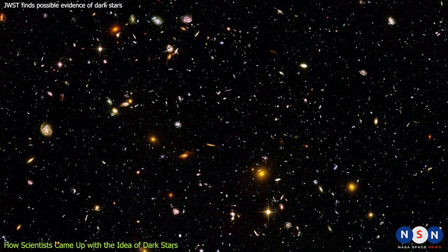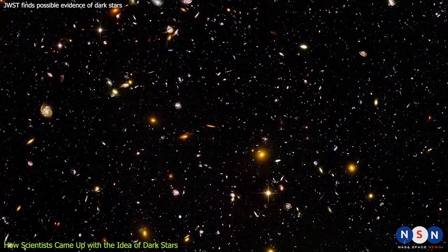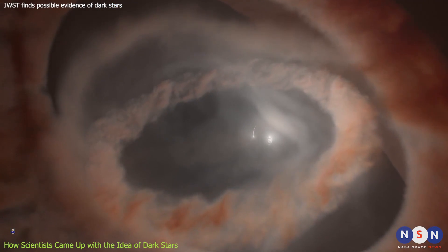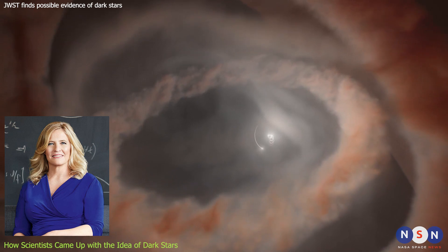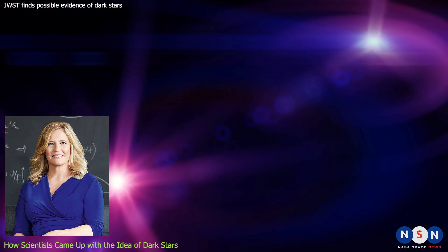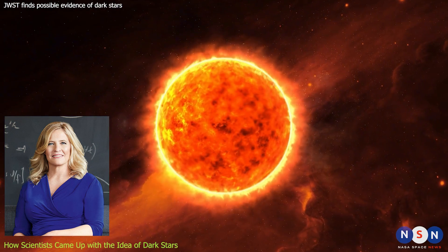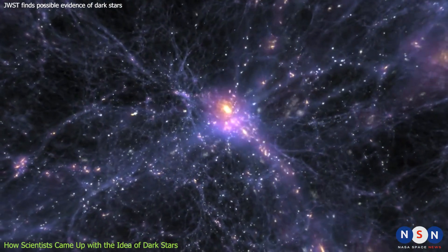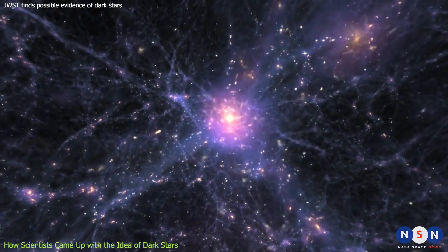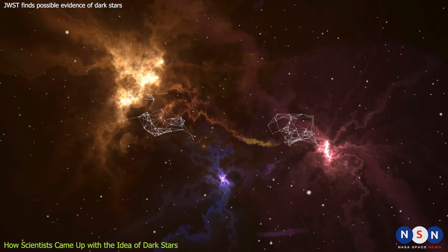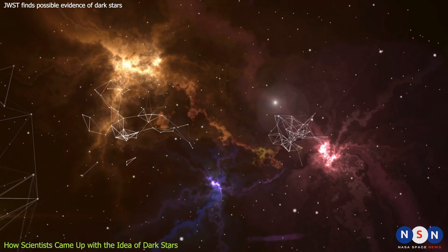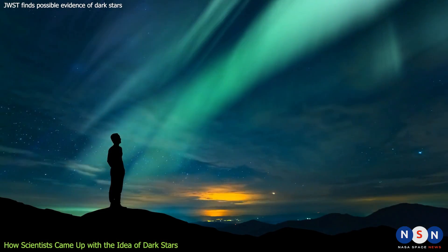It was not until the 21st century that a new theory emerged to explain how dark stars could exist. In 2007, a team of physicists led by Catherine Fries proposed that dark stars could be powered by dark matter rather than nuclear fusion. Dark matter is a mysterious form of matter that does not interact with light or ordinary matter, but only with gravity. It is estimated that dark matter makes up about 85% of all the matter in the universe, but we have never directly observed it.